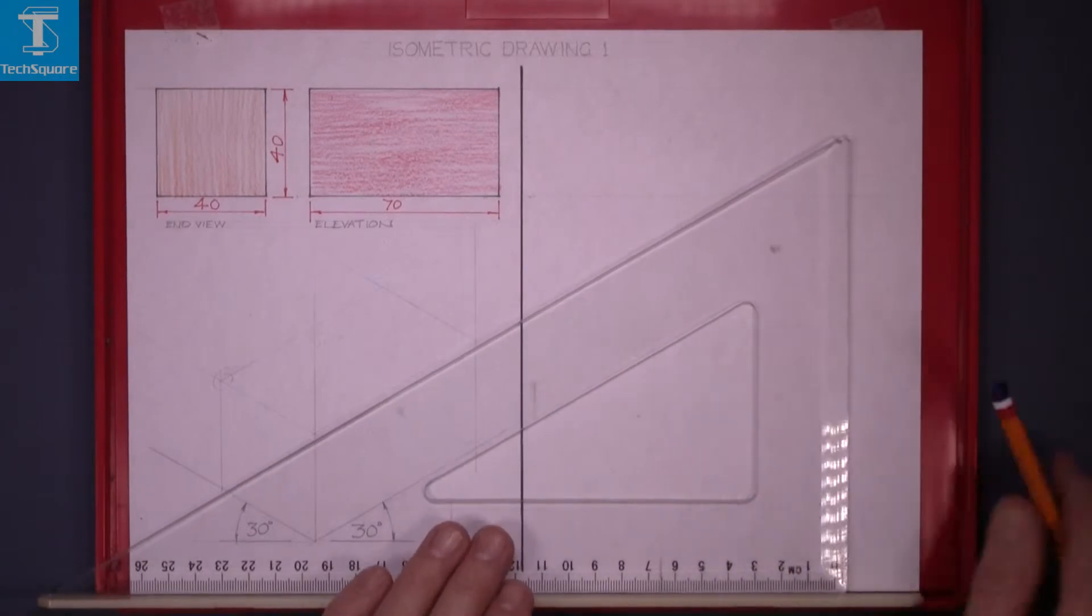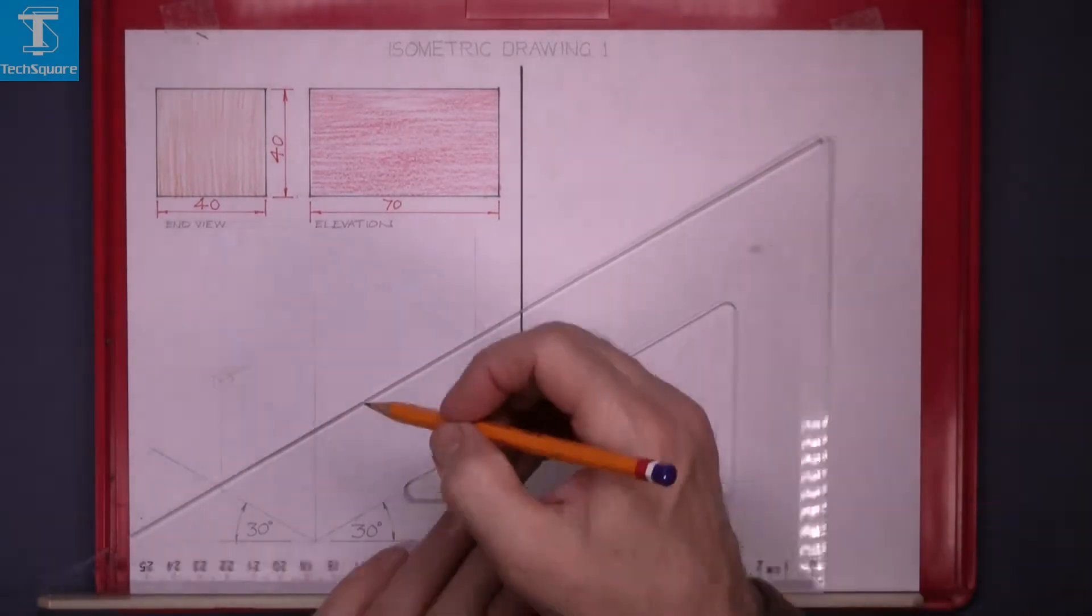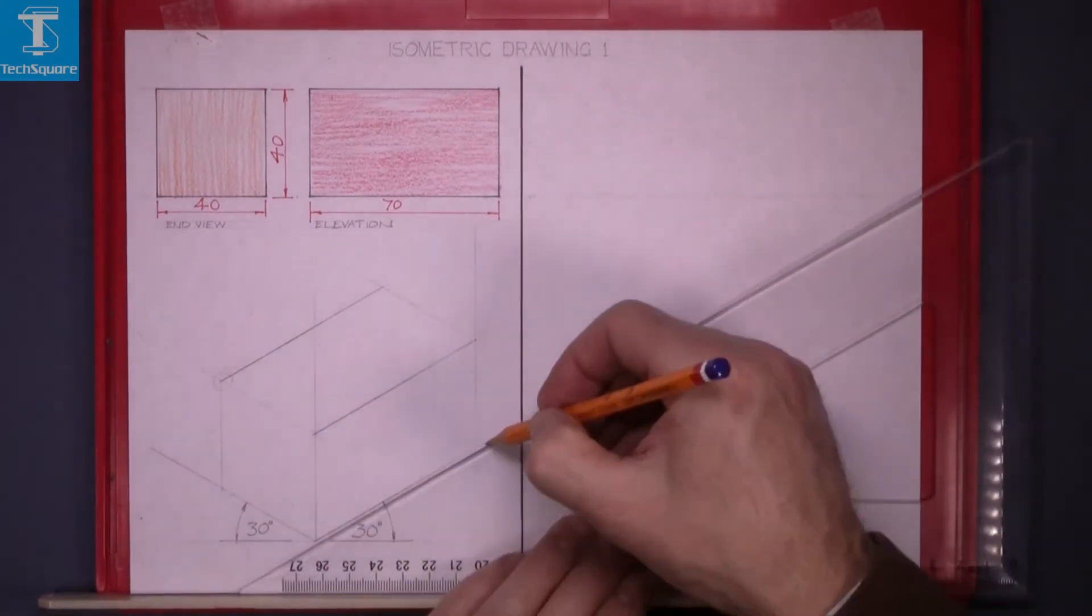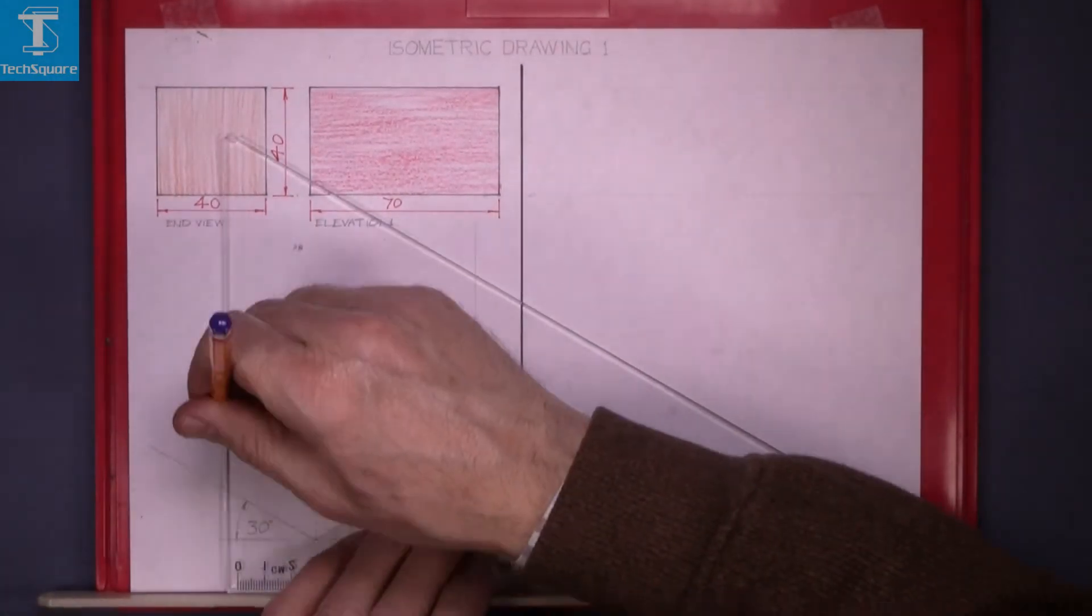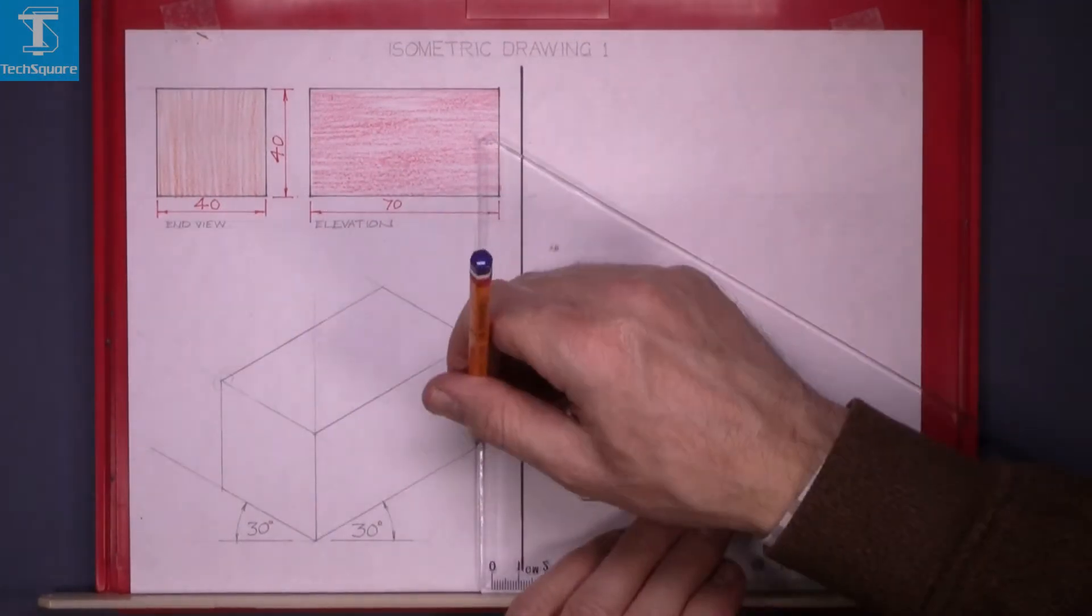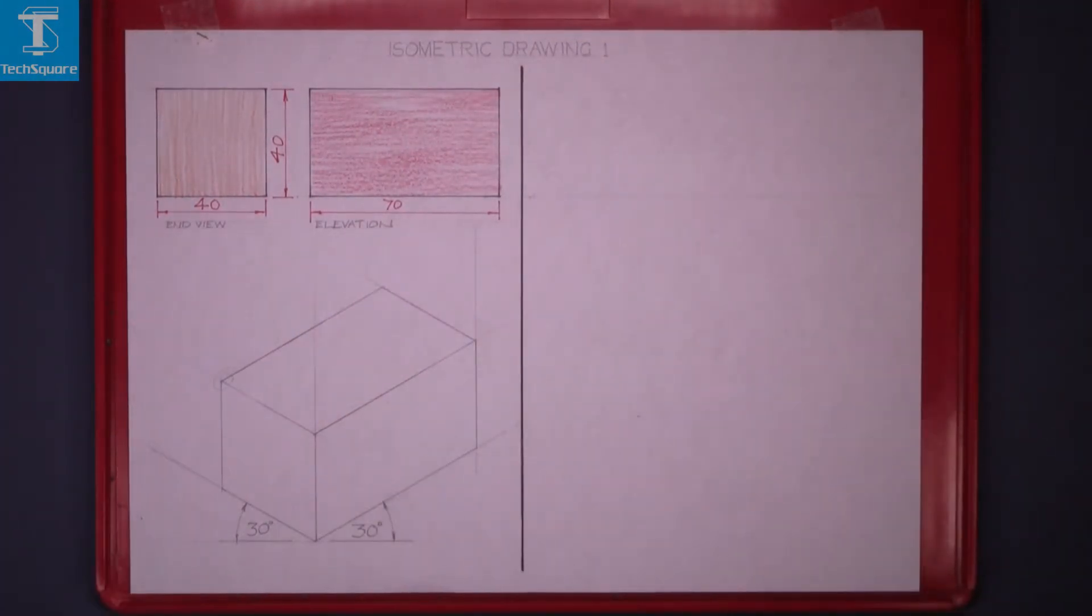And that is the isometric drawing complete. Now line it in. And that is your drawing complete. Now a little bit of color.